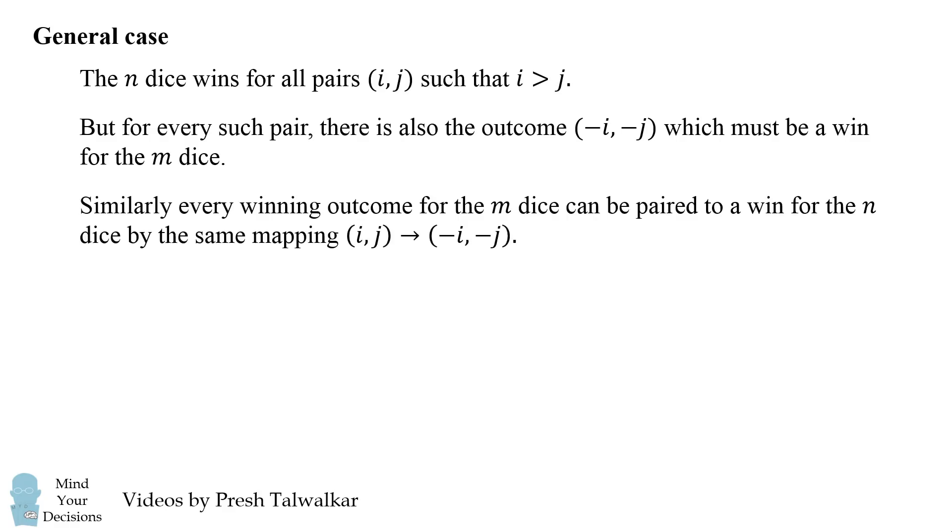Similarly, every winning outcome for the m dice can be paired with a win for the n dice by the same mapping, where i comma j goes to negative i comma negative j.